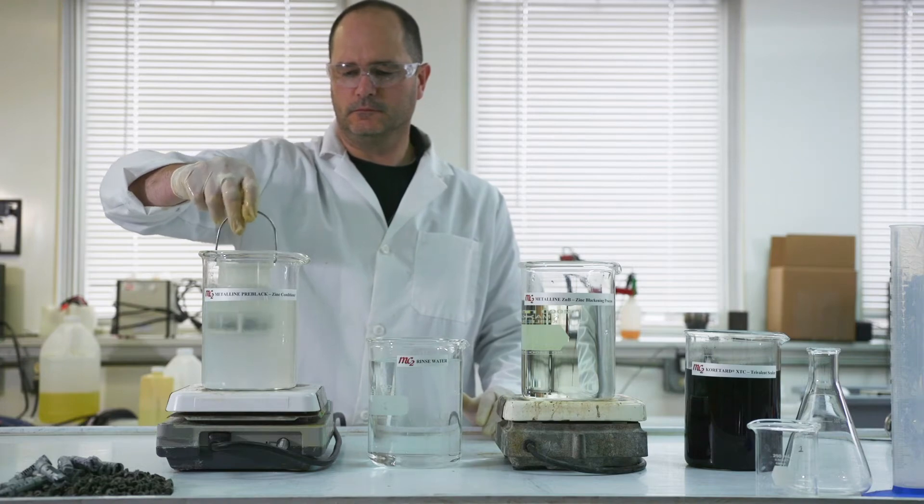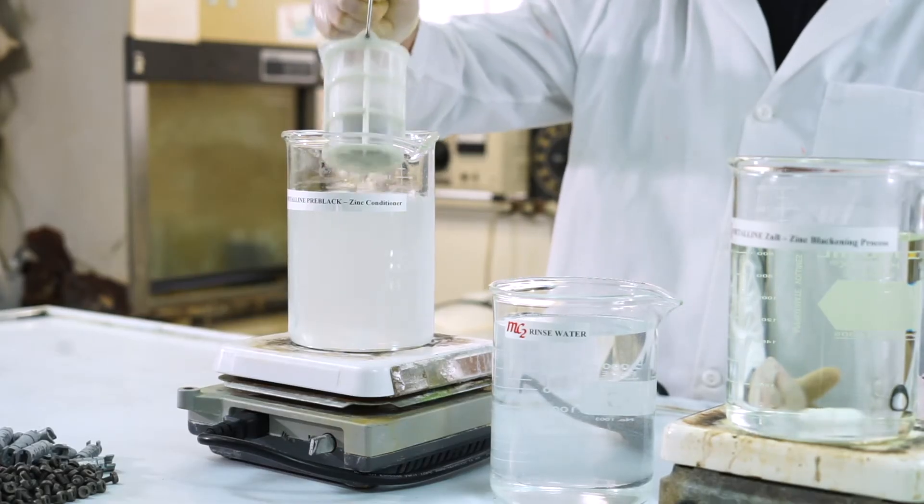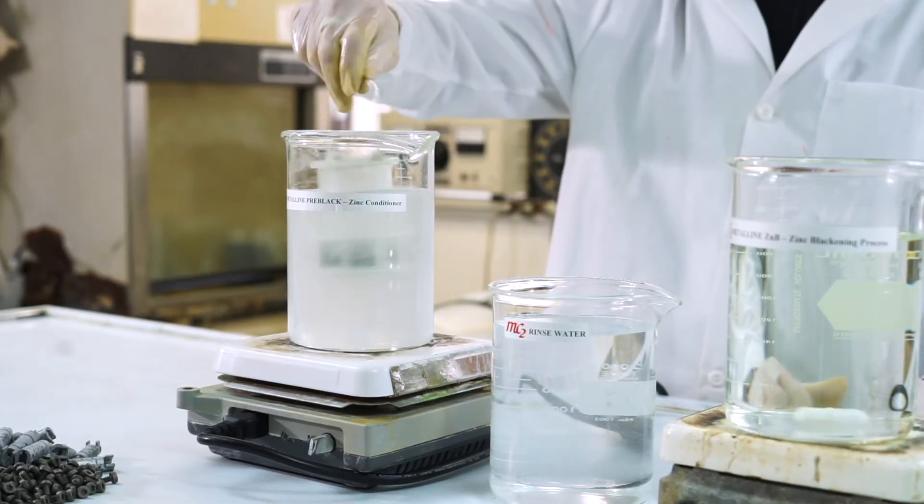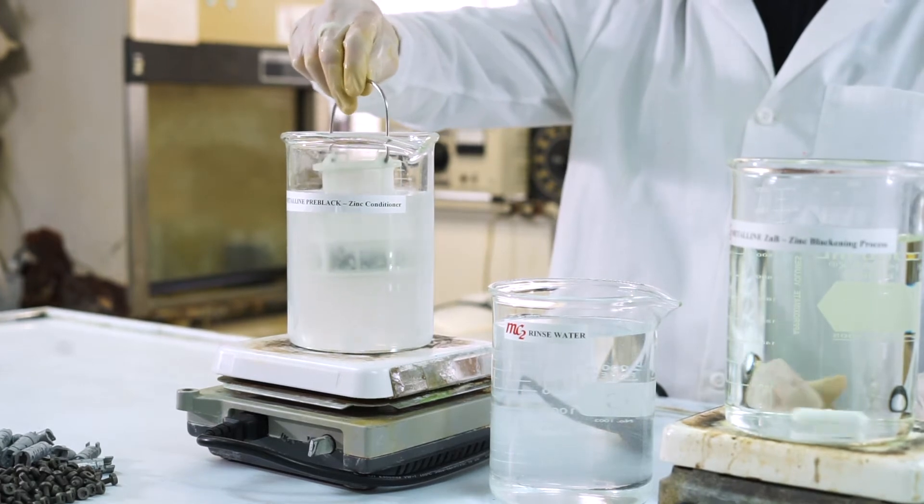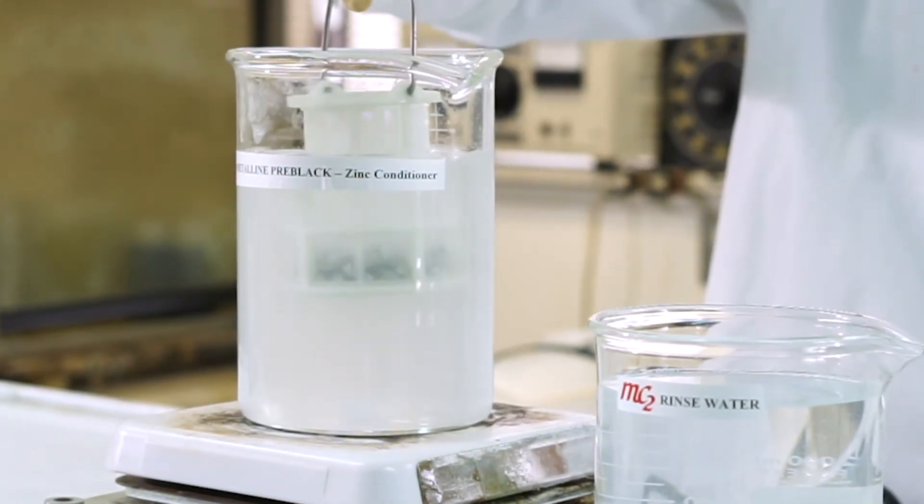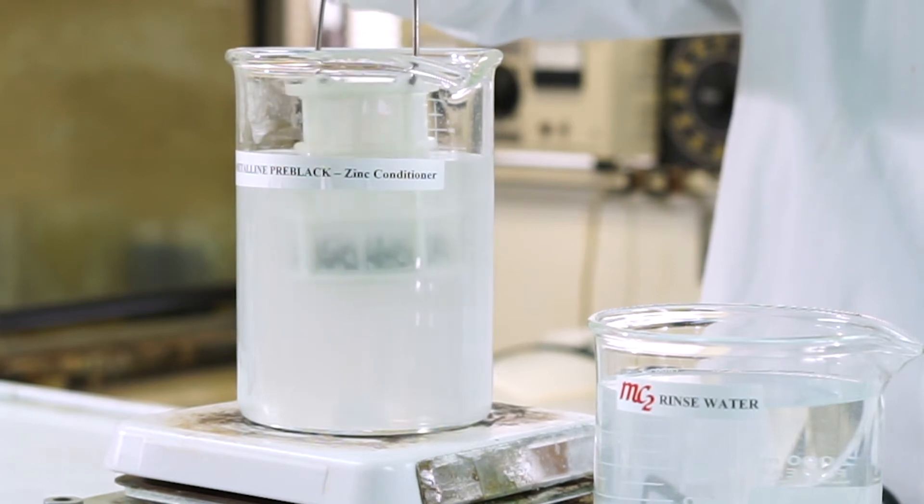The first step in the process after parts are zinc plated and rinsed is the MetaLine Pre-Black Surface Conditioner. It is made up at 20% by volume and has an operating temperature of 120 degrees Fahrenheit and an immersion time of 60 seconds.